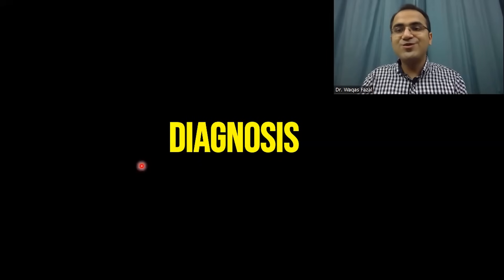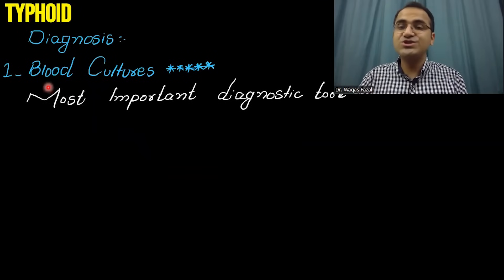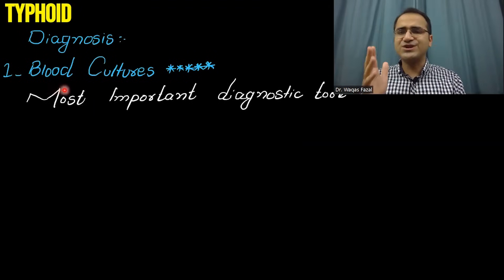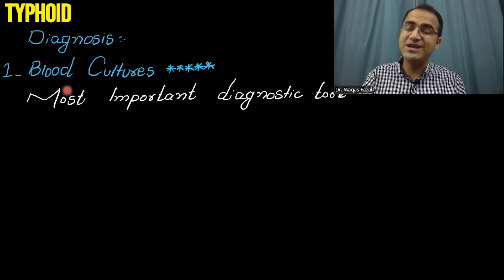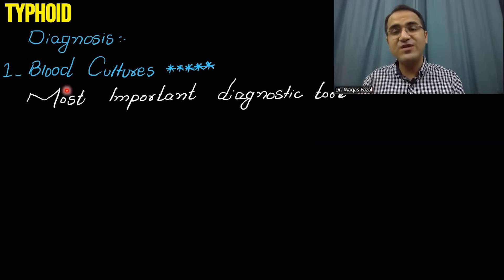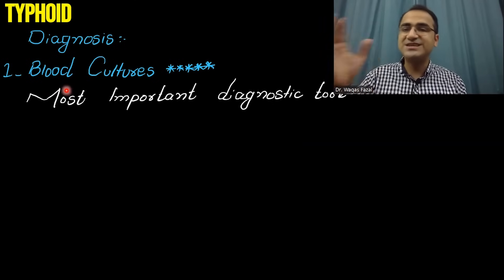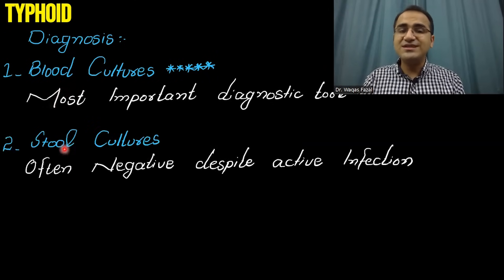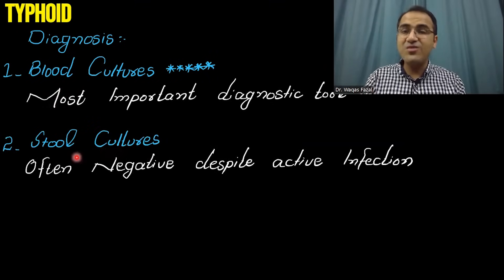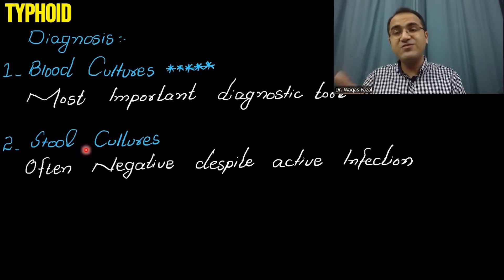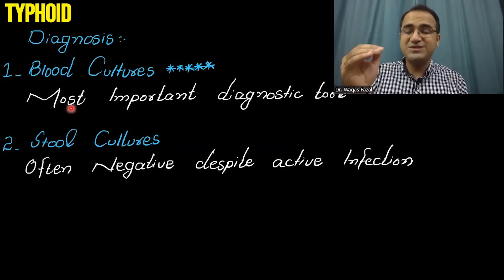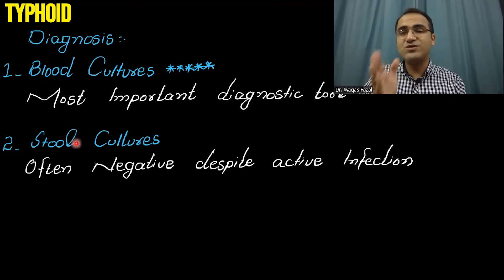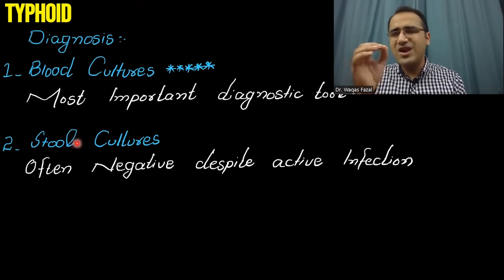Coming to the diagnosis of typhoid, blood cultures are the most important diagnostic tool. Whenever you suspect that the patient is suffering from typhoid fever, you must take blood and send it for cultures. Stool cultures can also be performed, but remember they are usually negative even with an active infection. Blood cultures are more specific and can be performed earlier. Stool cultures are positive only after two weeks and are low yield.